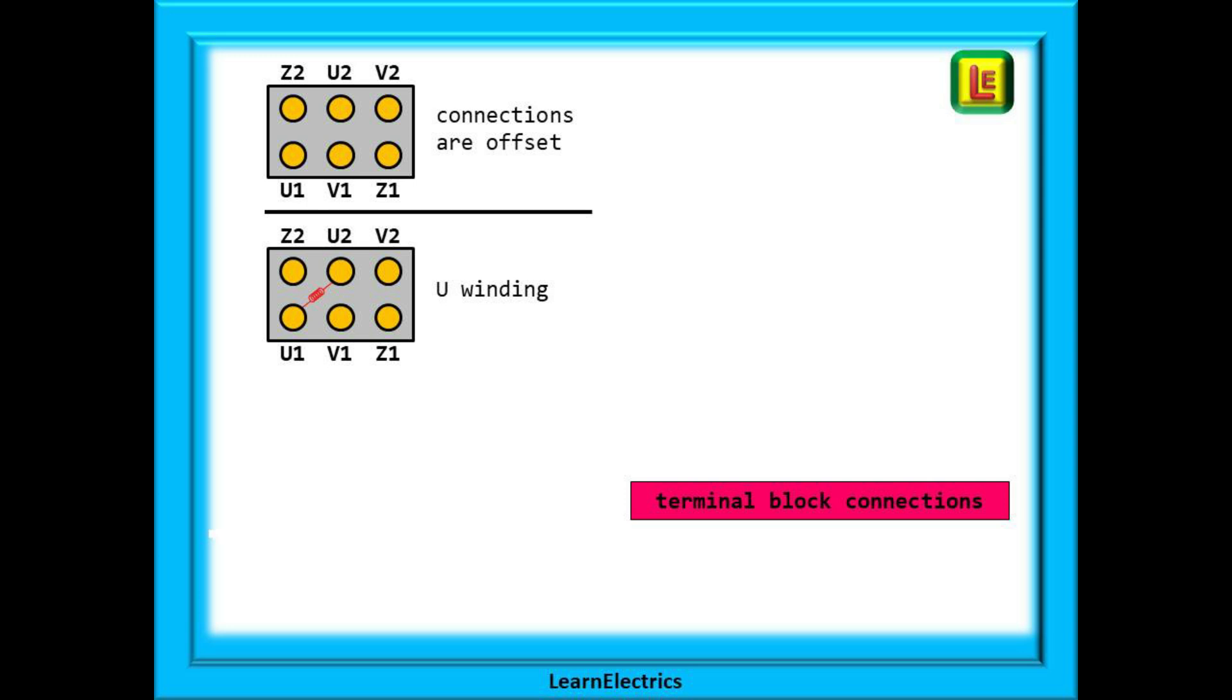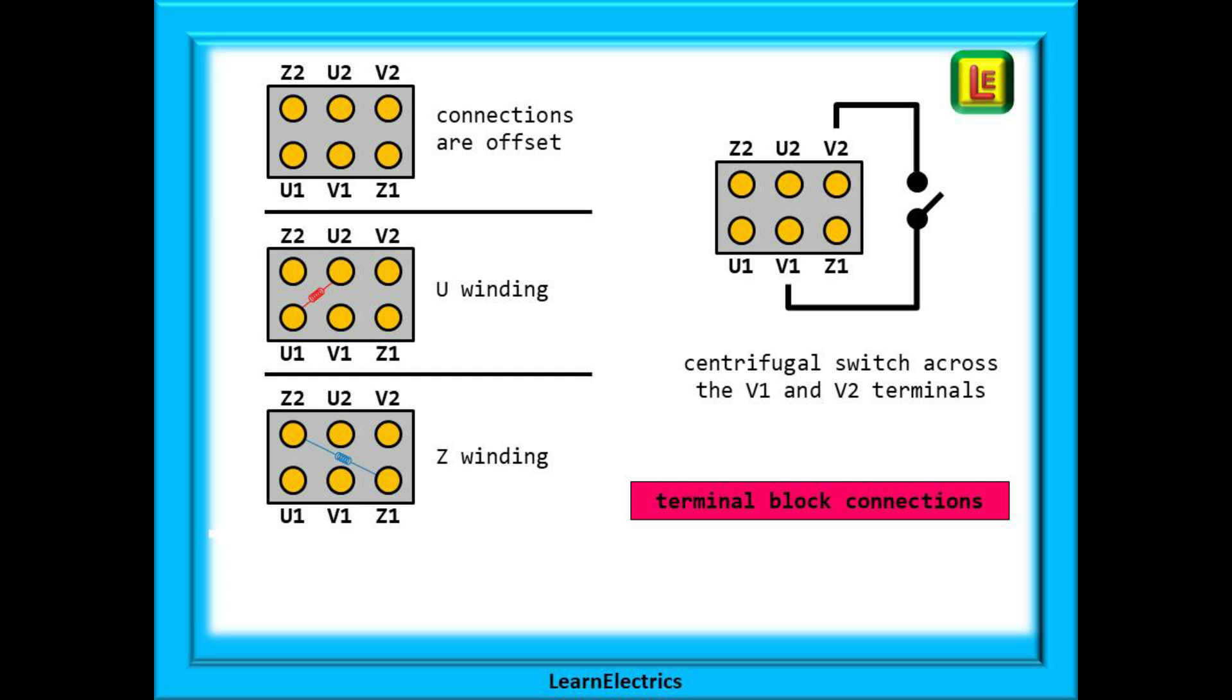First of all we have a U winding shown here as a little red winding between U1 and U2. This is how I visualize the terminal block. My brain sketches in the winding across the block. Then we have the Z winding shown in blue between Z1 and Z2. And finally we have the V1 and V2 terminals. The centrifugal switch is connected between these two connections.